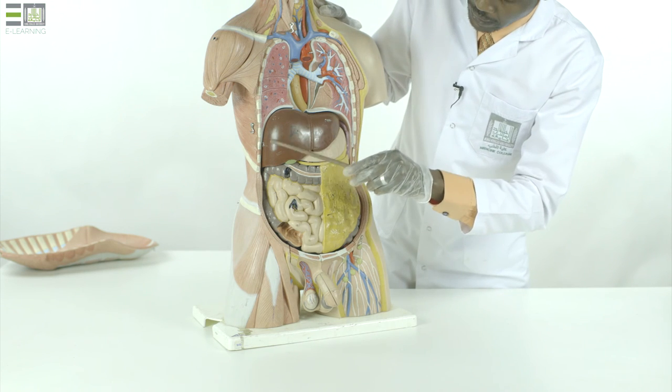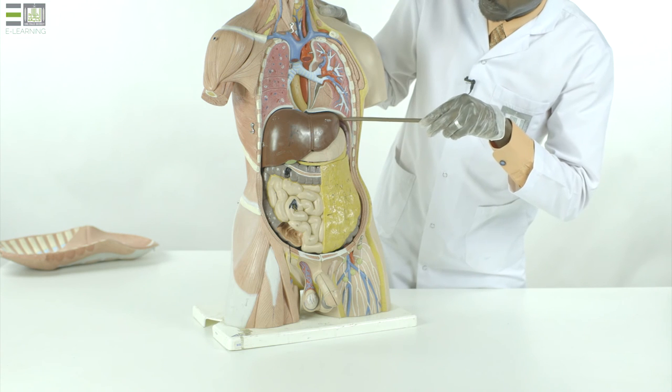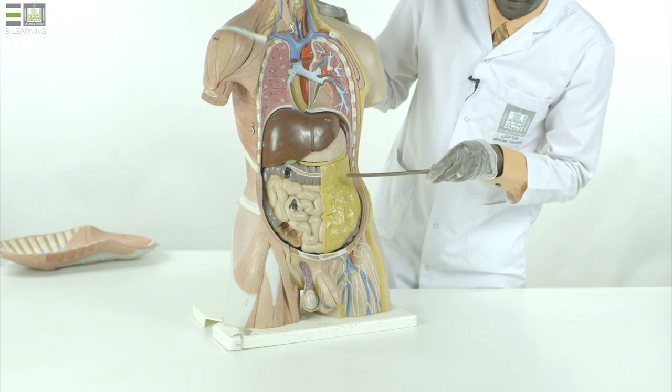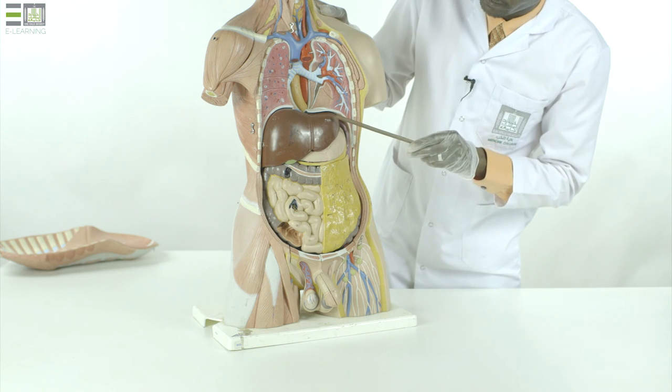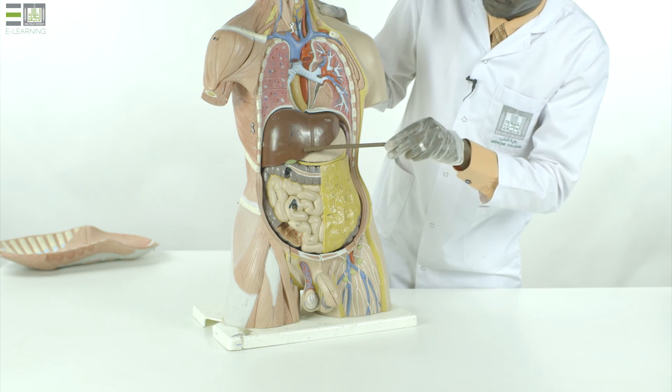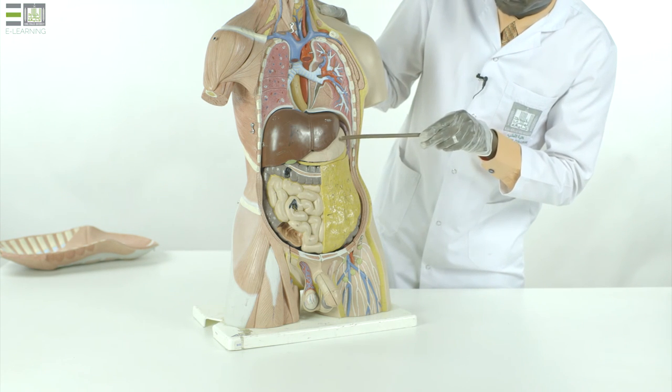Our abdominal cavity is lined with parietal peritoneum, which is a serous membrane consisting of simple squamous epithelium resting on basement membrane. Part of it covers the outer surface of viscera to form the visceral peritoneum, like this which covers the outer surface of the liver, and this one which covers the outer surface of the stomach.